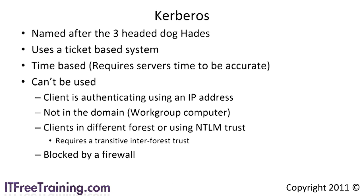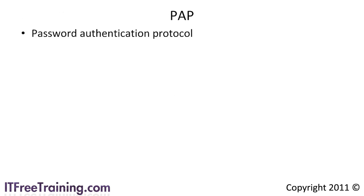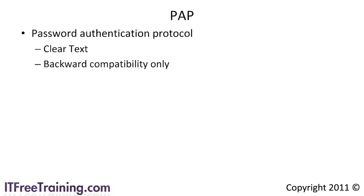NTLM and Kerberos are primarily used for authentication of a user on a network when they are directly connected. When connected remotely, there are often a different set of protocols used. The first of these is PAP, or Password Authentication Protocol, which uses clear text. This makes the protocol very insecure and it should only be used for backward compatibility or in a testing environment. Whenever possible, you should avoid using PAP.